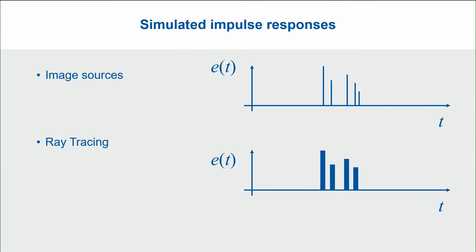Let's talk about the final results. In image source methods, in the classical way, we get distinct entries of energies and travel times. As illustrated in the upper figure, the time resolution and the precision of the energy is quite high. On the other hand, as illustrated in the lower figure, ray tracing is based on counting of energies in time intervals, so we get blocks — we call this a histogram. The resolution in time may not be sufficient to distinguish between two reflections arriving in the same time interval.